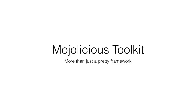Today I'm going to talk about Mojolicious — not the full framework, but the toolkit that enables the framework. Mojolicious is a web framework like Ruby on Rails or Node Express. Supporting the web framework is a collection of utility classes that we call the Mojolicious toolkit. This presentation is about the toolkit, not the framework, so I won't be showing a lot about how to build web applications, but that's something we can cover in the future.